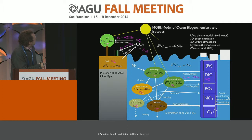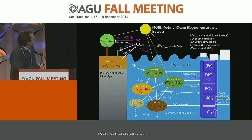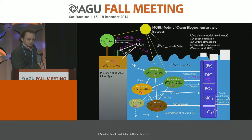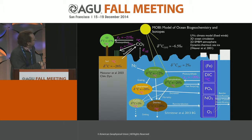The model has a very simple atmospheric component — just a one-layer, two-dimensional energy-moisture balance model — and that allows very long-term millennial timescale simulations. One important thing to note is that all the simulations I'm showing you today use fixed, prescribed, modern winds. So there are no changes in winds. The ocean circulation is a reasonably good three-dimensional general circulation model, and it includes dynamic thermodynamic sea ice.